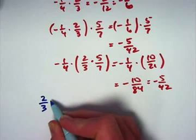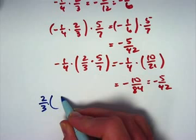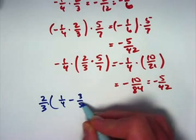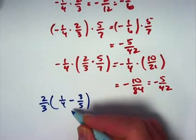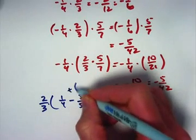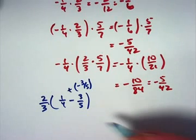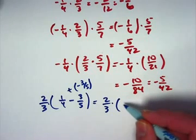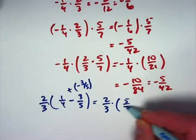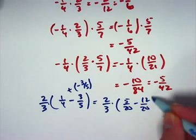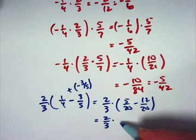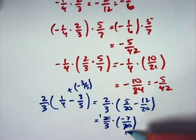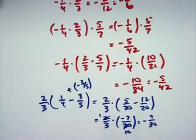Addition is also associative, and the distributive property still works. As an example: two-thirds times the quantity one-fourth minus three-fifths. Remembering that minus is the same as adding the negative, the distributive property should apply here. Let's first work inside the parentheses with a common denominator of 20: one-fourth becomes five-twentieths, three-fifths becomes twelve-twentieths. Five minus twelve is negative seven, so we get negative seven-twentieths. Multiplying by two-thirds and canceling the two with the 20 gives negative seven-thirtieths.